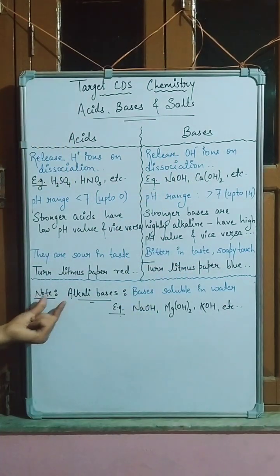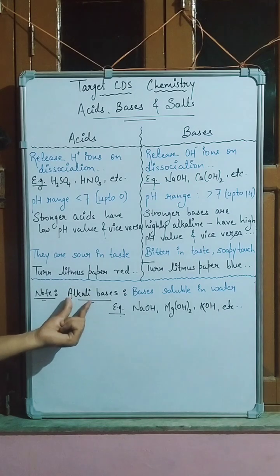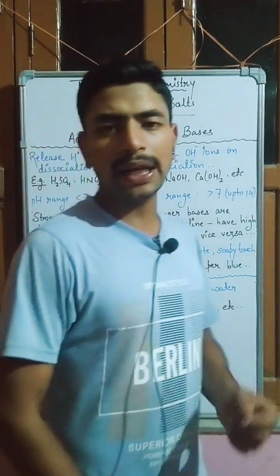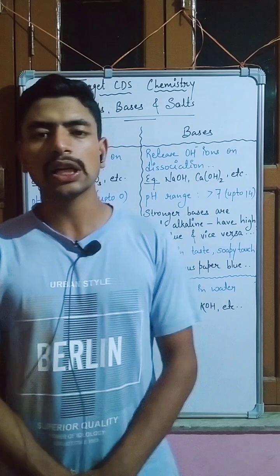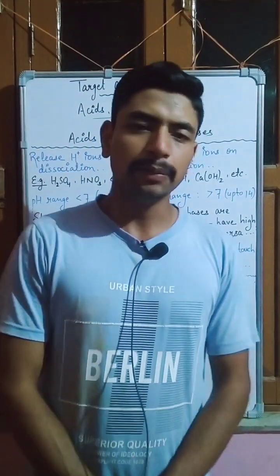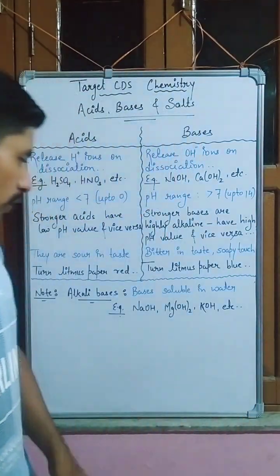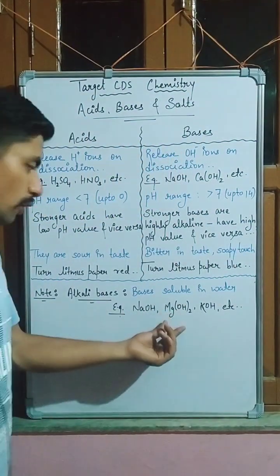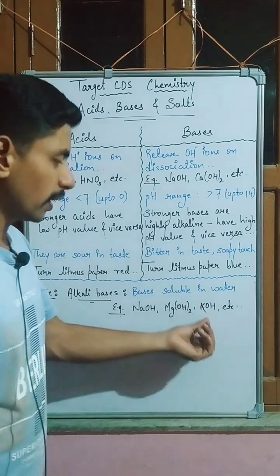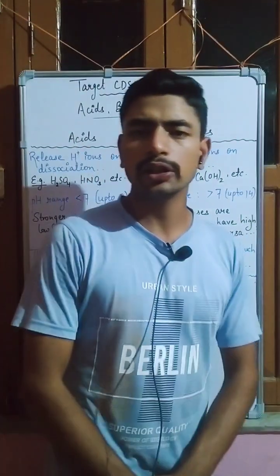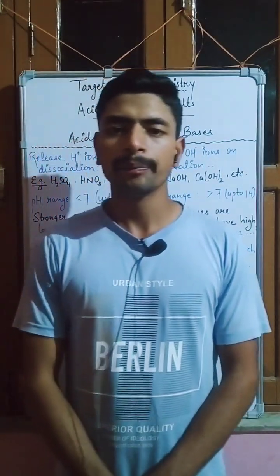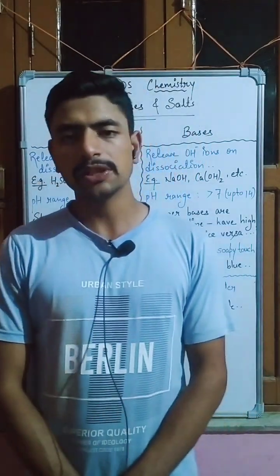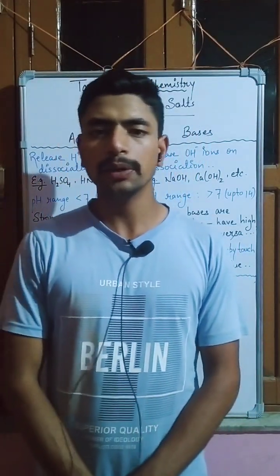One other important point is that bases have a special category called alkali bases. Alkali bases are those bases which are soluble in water. Examples include NaOH, KOH, magnesium hydroxide, calcium hydroxide, etc. These are the alkali bases.